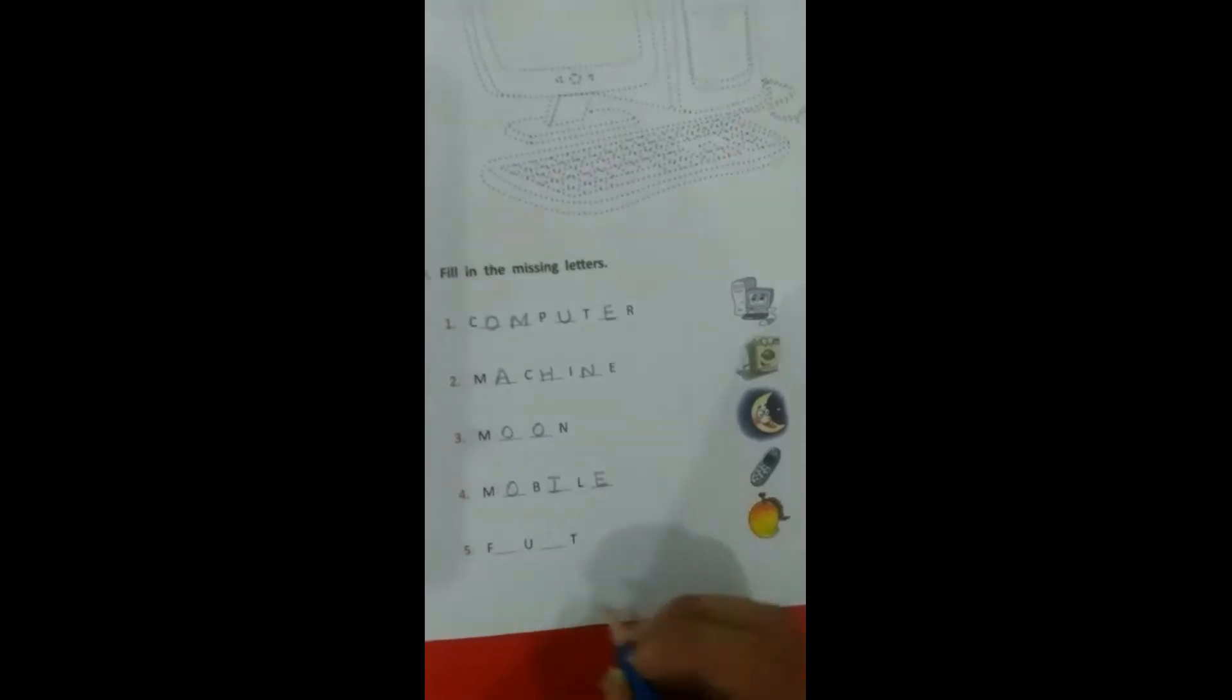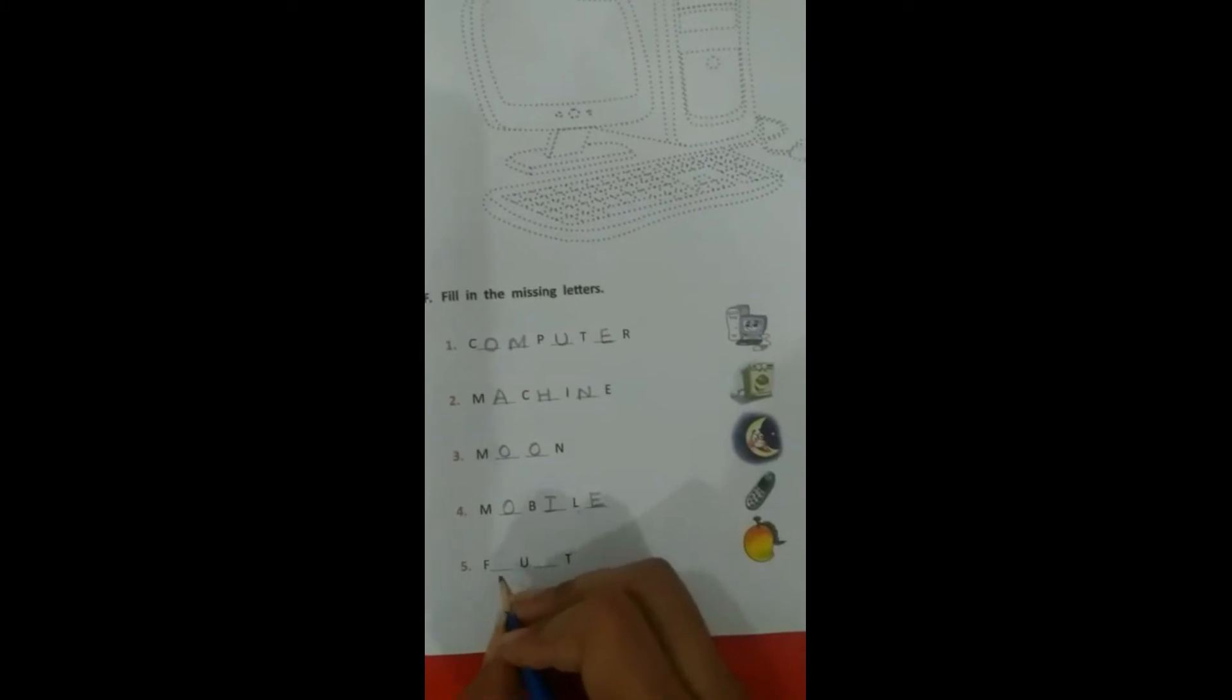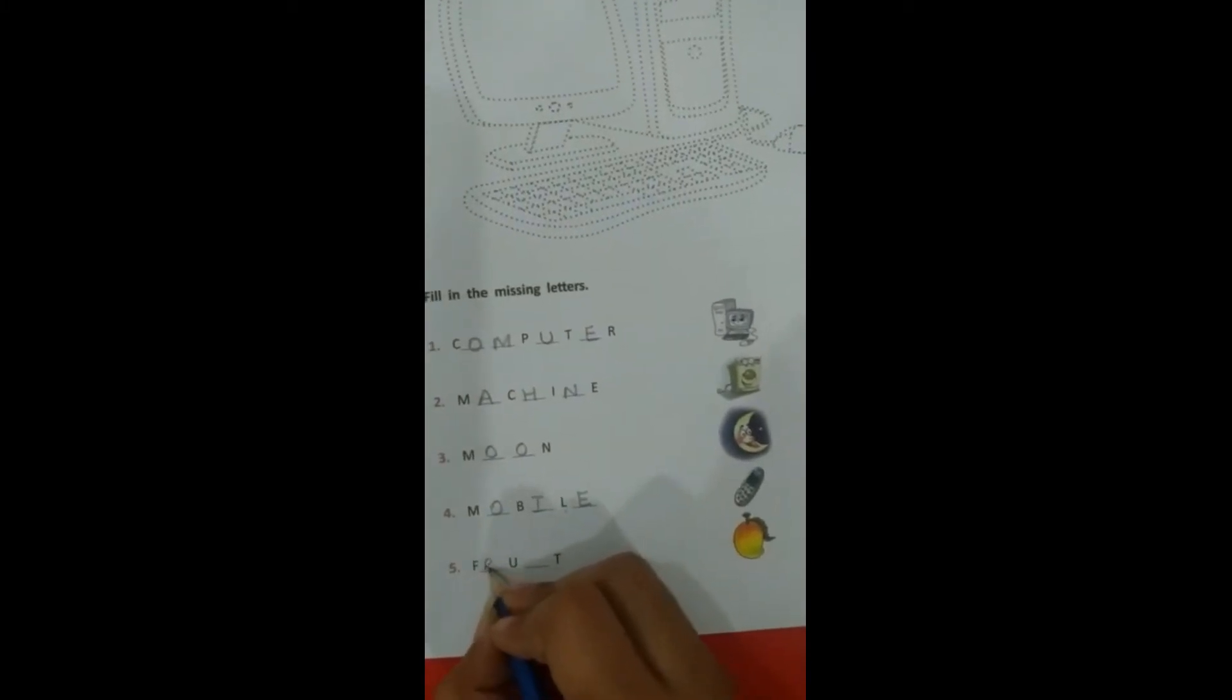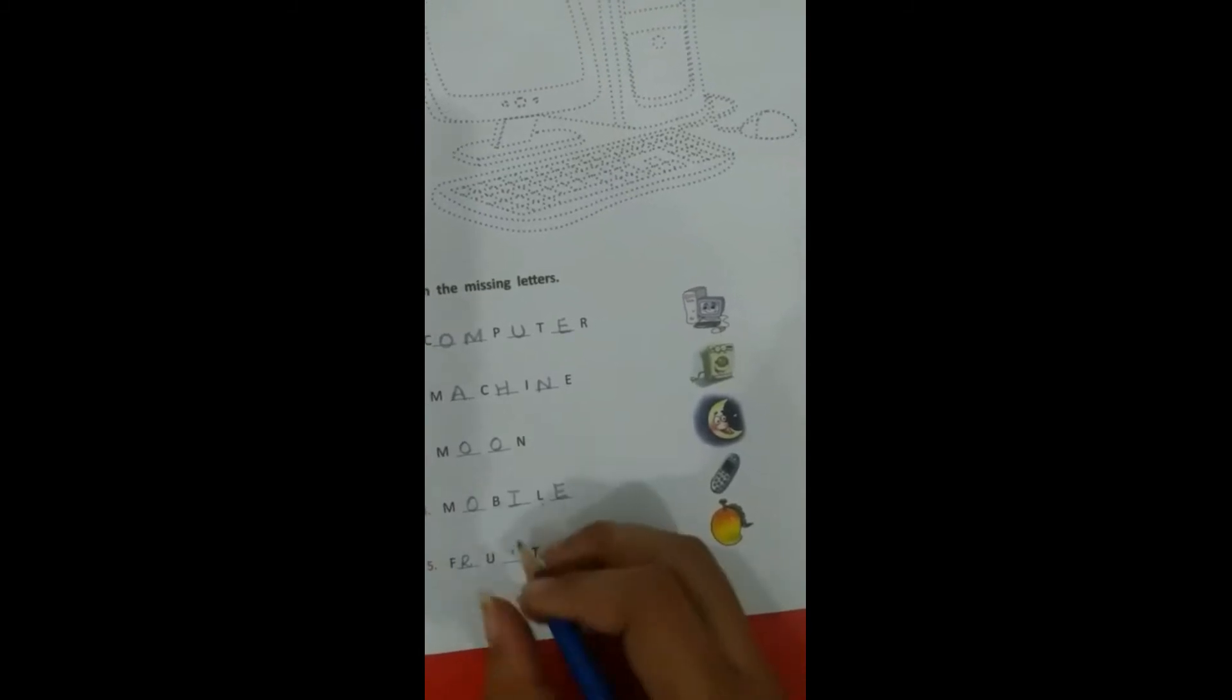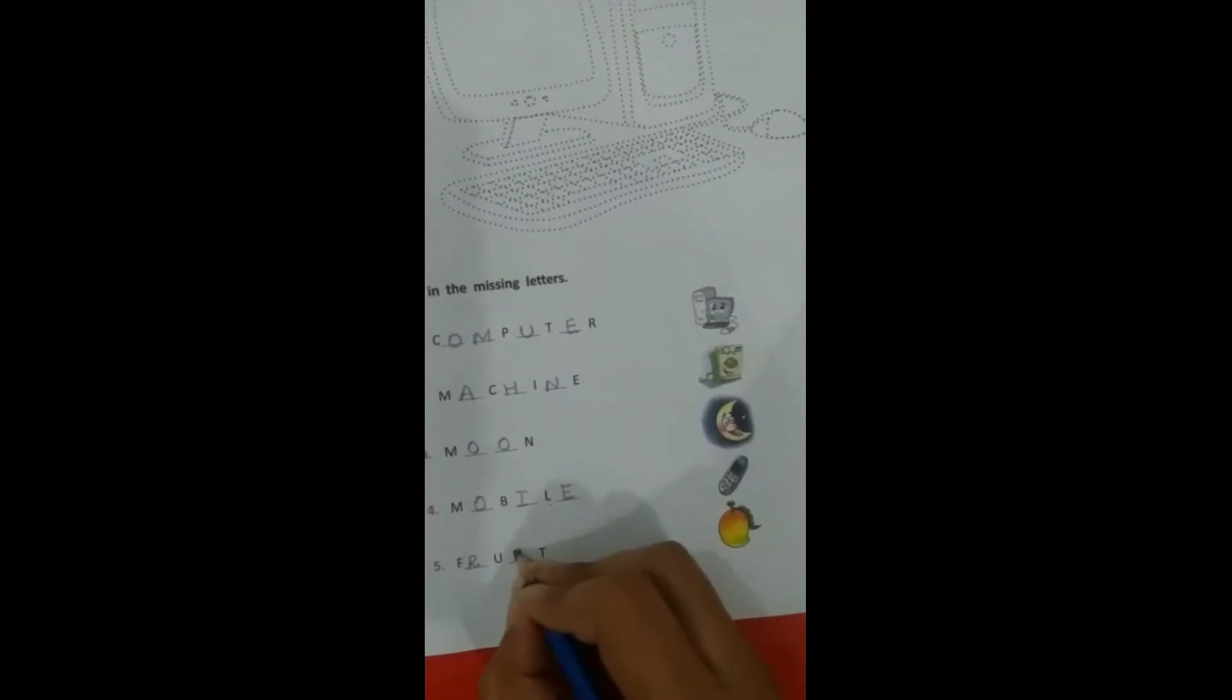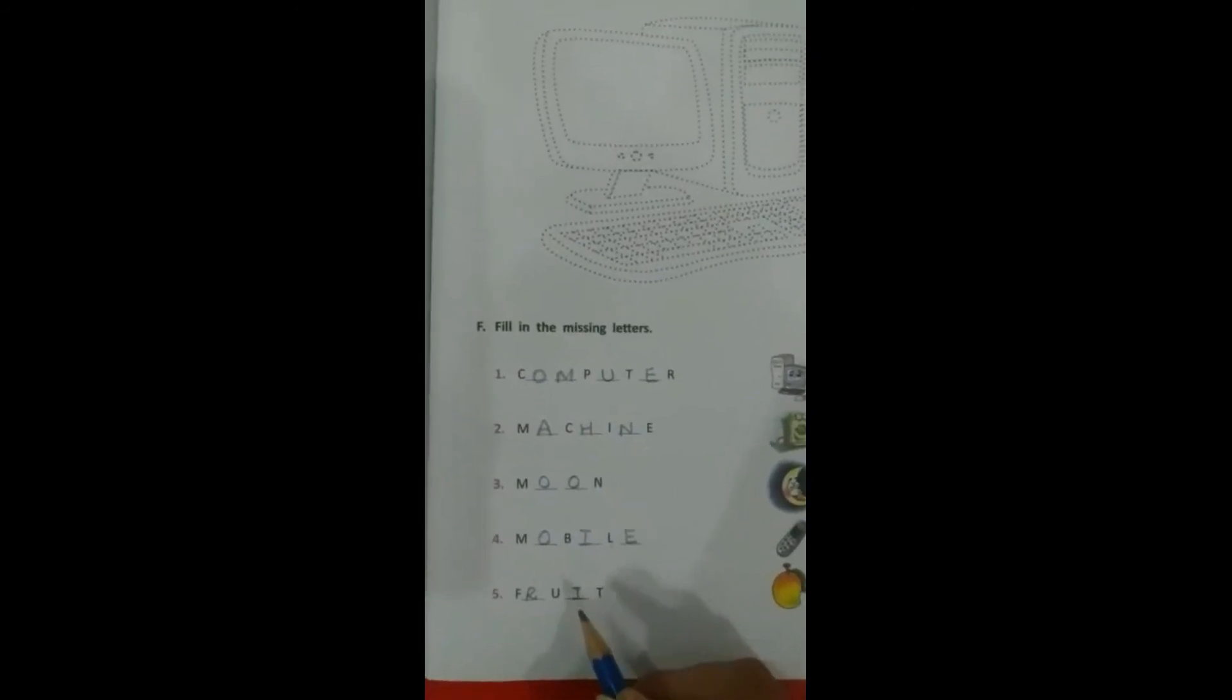Mobile. Number five, fruit. Given letter is F, then R, U, I, T is written. Fruit. You can do this in your book with pencil.